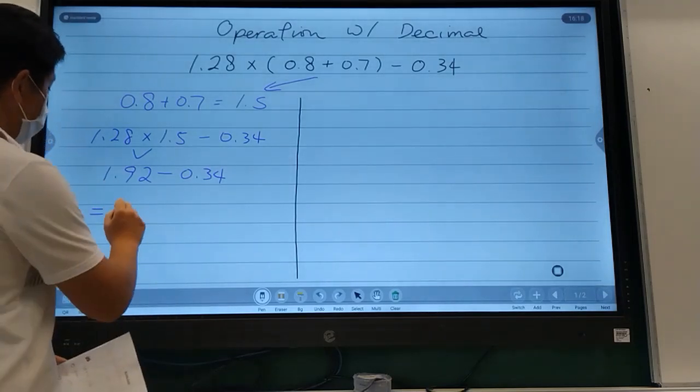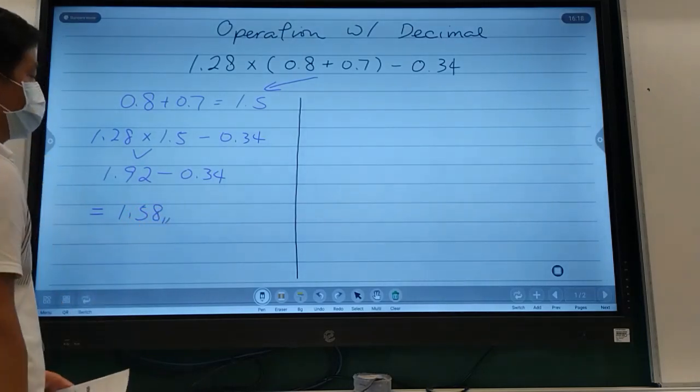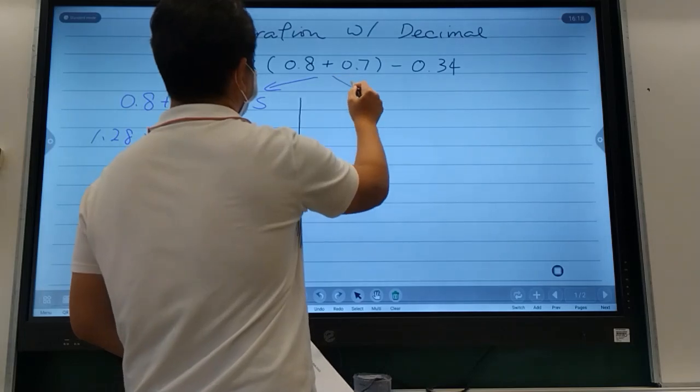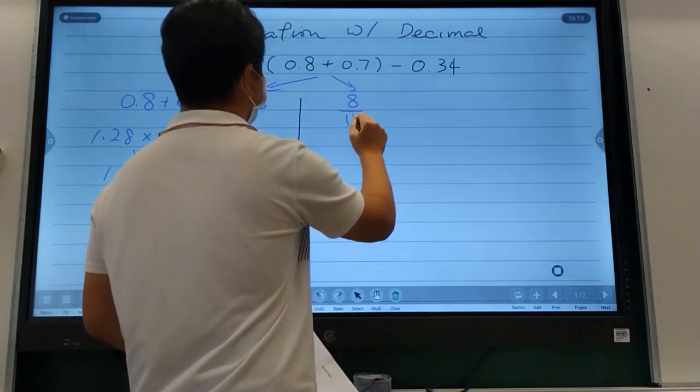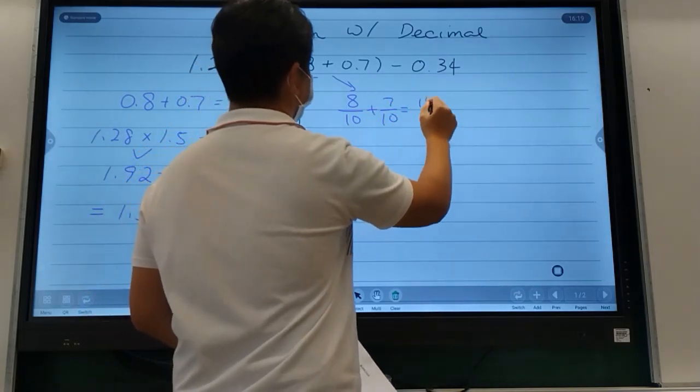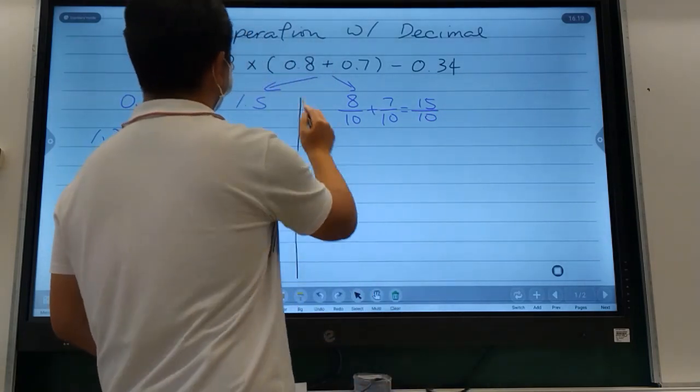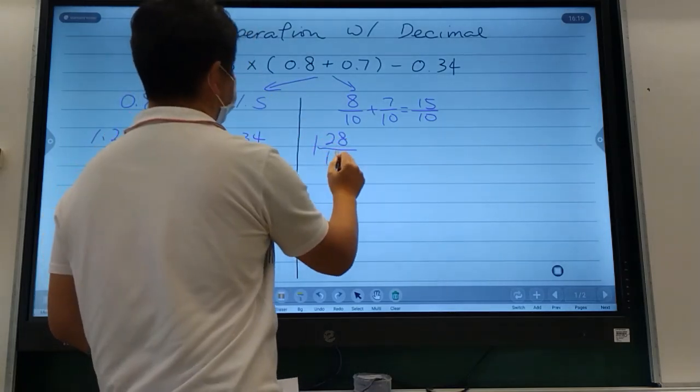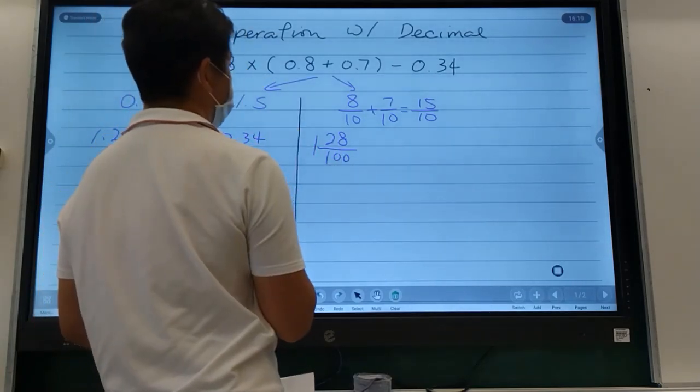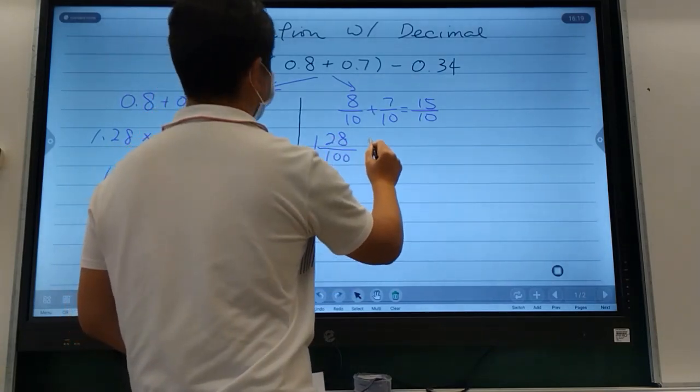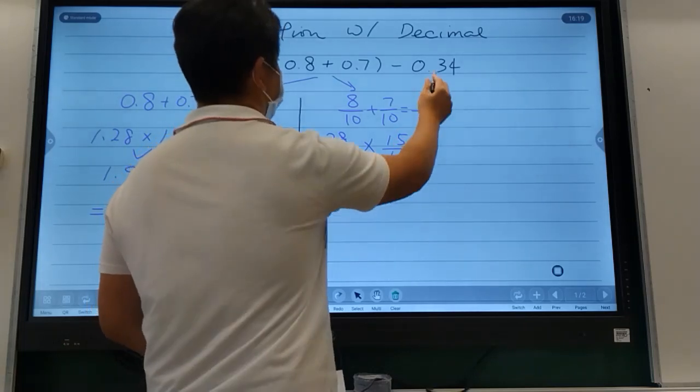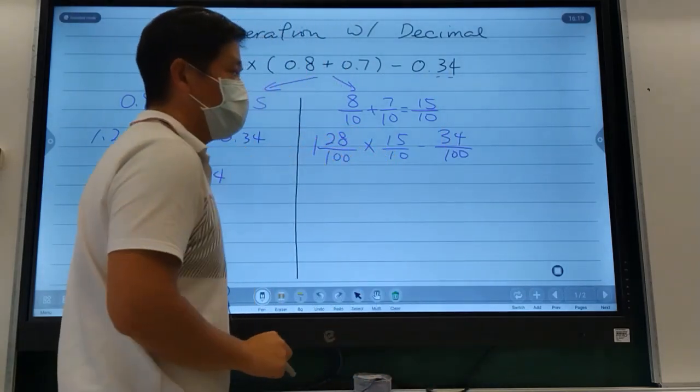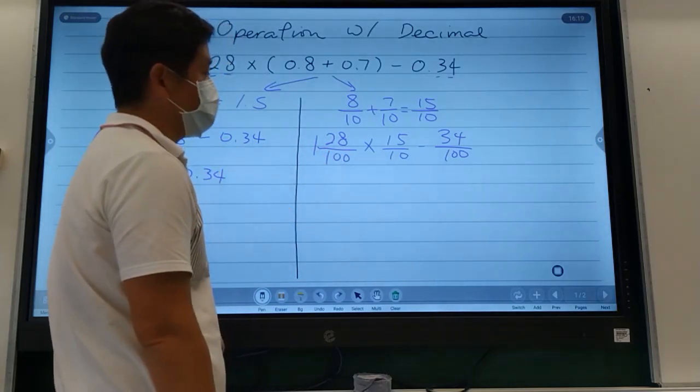Now let's try to do this all in fraction. I'm going to turn everything into a fraction. 8 over 10 plus 7 over 10 equals 15 over 10. The next thing I need to do is rewrite everything into fraction: 1 and 28 over 100, times 15 over 10, and then 34 over 100.